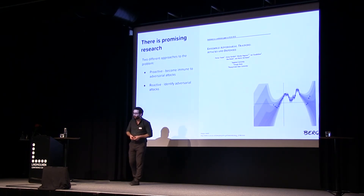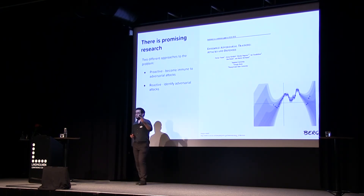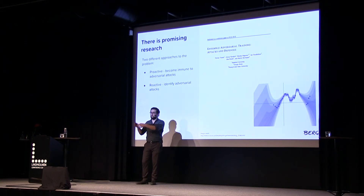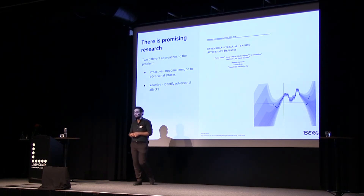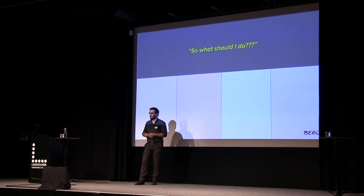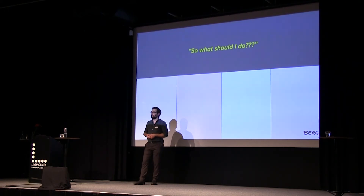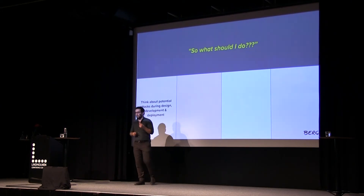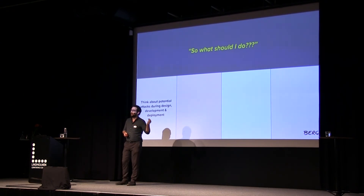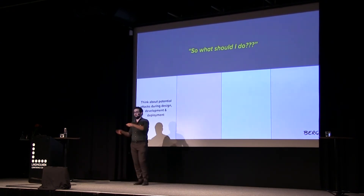There is stuff happening. Especially with Bayesian networks — networks that can express uncertainty — there are promising indicators they might work in this setting, flagging when they're uncertain about input. In practice, you should think about potential attacks during design, development, and deployment. This isn't as easy as importing some layer from TensorFlow like 'import robust to black box attacks' — you need to think about this from the beginning: how am I going to deploy my model, how are people going to access it, will they have access to the weights?